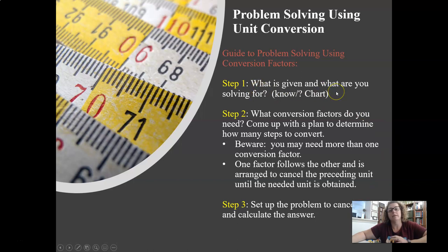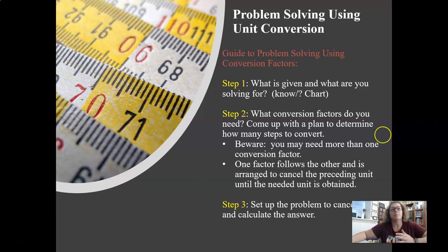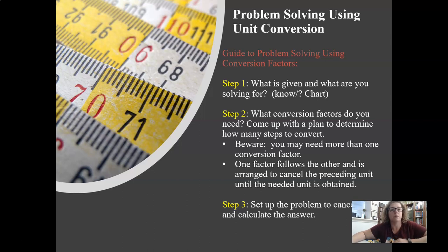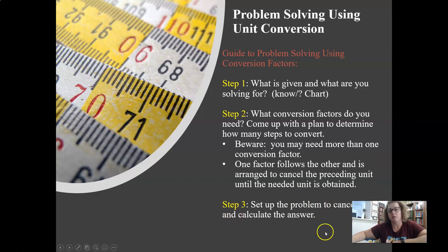Step number one: I teach my students what's called a know and a don't know chart. It's really helpful to organize your work so you can see the information given to you and know what to solve for. Step number two: what conversion factors do you need? You've got to come up with a plan on how to get from step A to step B — sometimes through B to C or C to D — what's called a multi-step conversion. One factor will always cancel out with another to eliminate the units you don't want and get to the units you do want.